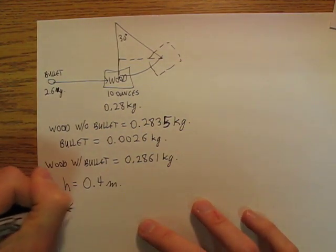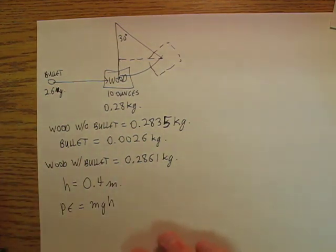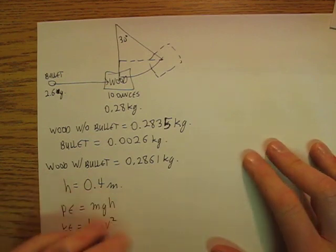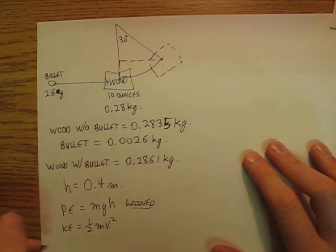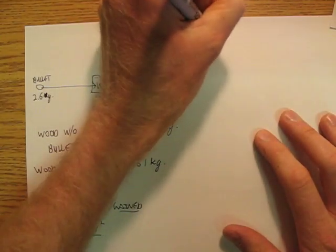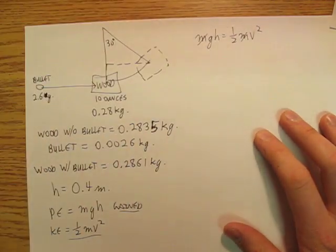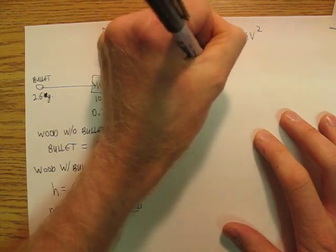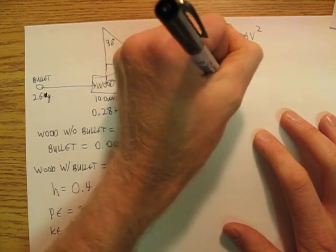So I'm going to say that the rise was 0.4 meters. The potential energy gained was mgh, and that all came from kinetic energy. So if I say that the potential energy gained came from the kinetic energy, then I can come up with mgh equals one-half mv squared. The mass cancels anyway, so it doesn't even matter what the mass was.